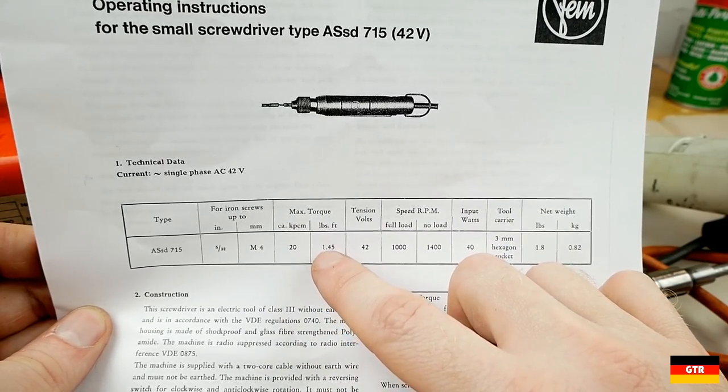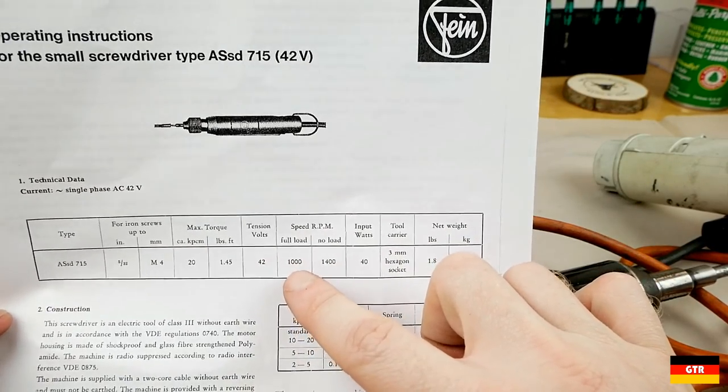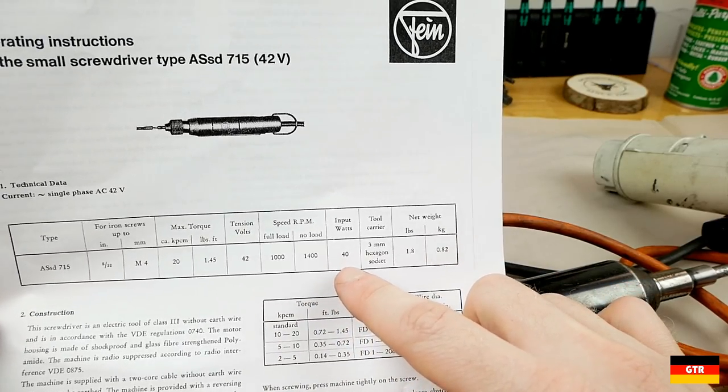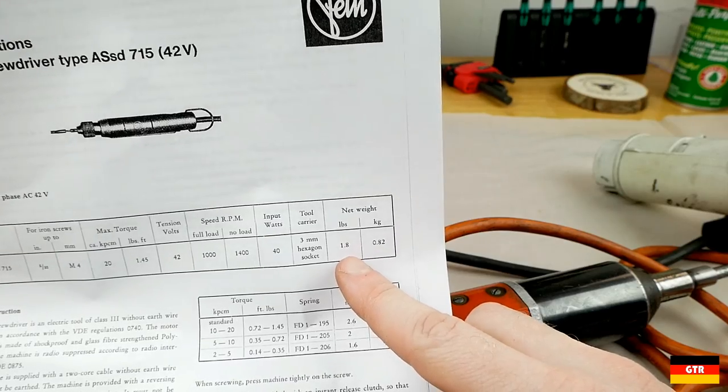Max torque is 1.45 foot-pounds. So 10 volts, 42 full load speed, 1000 RPM, 40 watts, net weight 1.8 pounds.